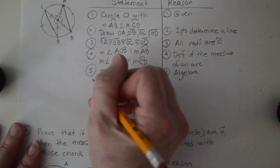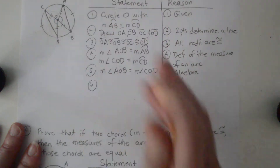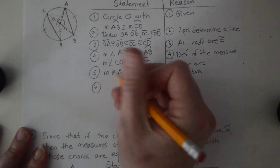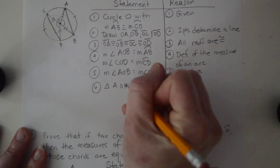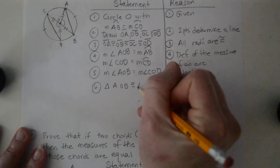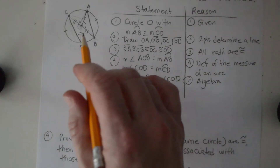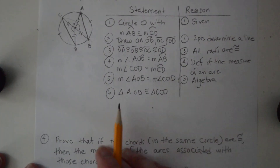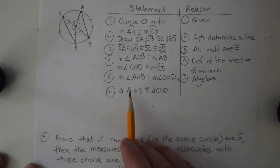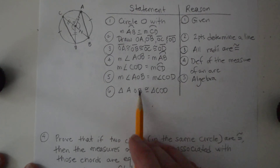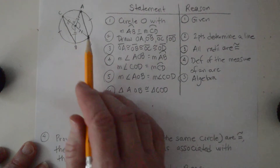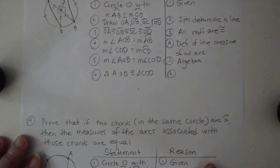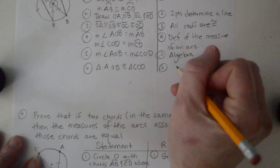Now that we have that, triangle AOB is congruent to triangle COD. These are both isosceles triangles, so as long as we get that included angle in the center, the lettering is flexible here — unlike other triangles where it's really important to get that accurate. The reason is side-angle-side.